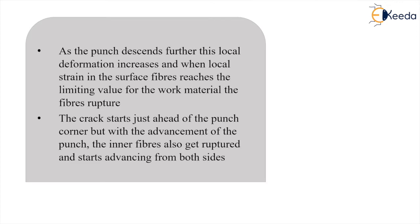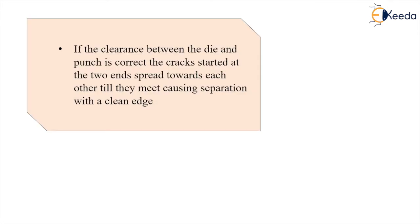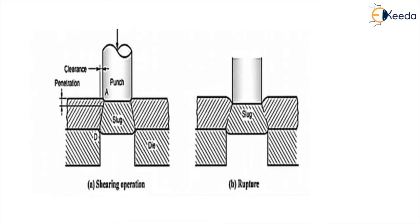As the punch descends, local deformation increases, and when the local strain in the surface fibers reaches the limiting value for the work material, the fiber ruptures. The crack advances ahead of the punch corner, but with further advancement of the punch, the inner fibers also get ruptured and cracks start advancing from both sides. The important thing to understand is how these two cracks — from the corner of the punch and corner of the die — are going to meet exactly within the sheet thickness.